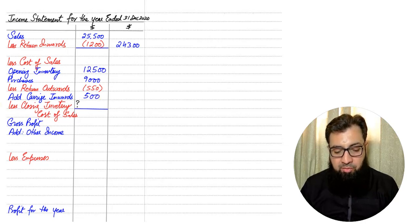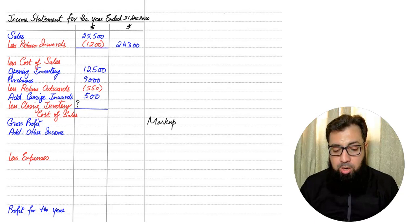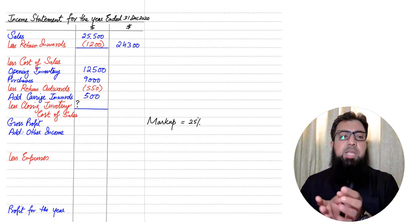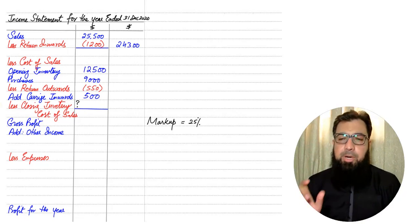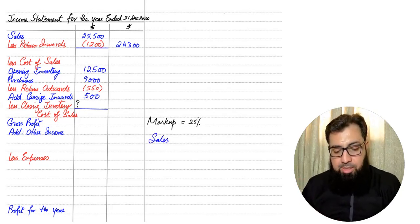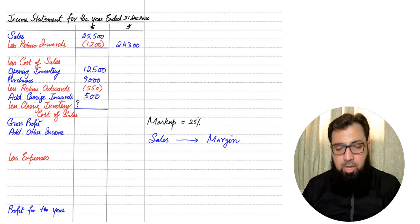In this question the examiner has not given the closing inventory figure. When closing inventory is not given, we need to use the concepts of markup and margin. Markup is a percentage applied on the cost of sales figure in order to calculate gross profit. In this question markup is 25%. If the sales figure is given, we apply a margin percentage on sales to calculate gross profit.